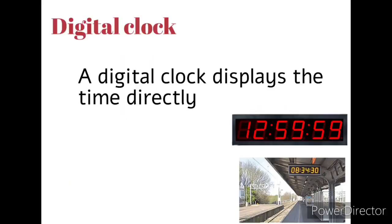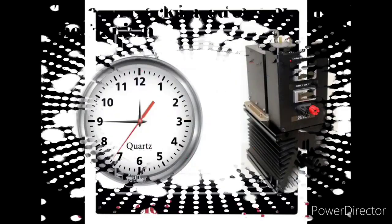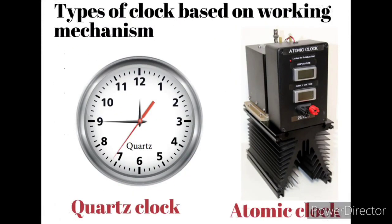Digital clock: A digital clock displays the time directly. Recent clocks are showing time, date, month, year, temperature, etc.